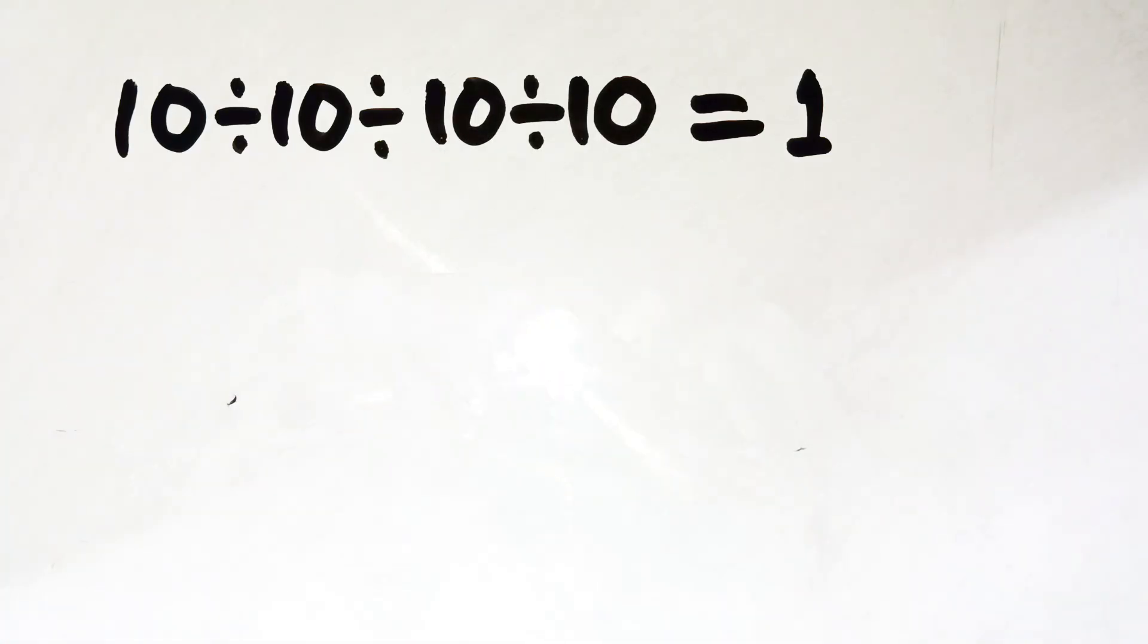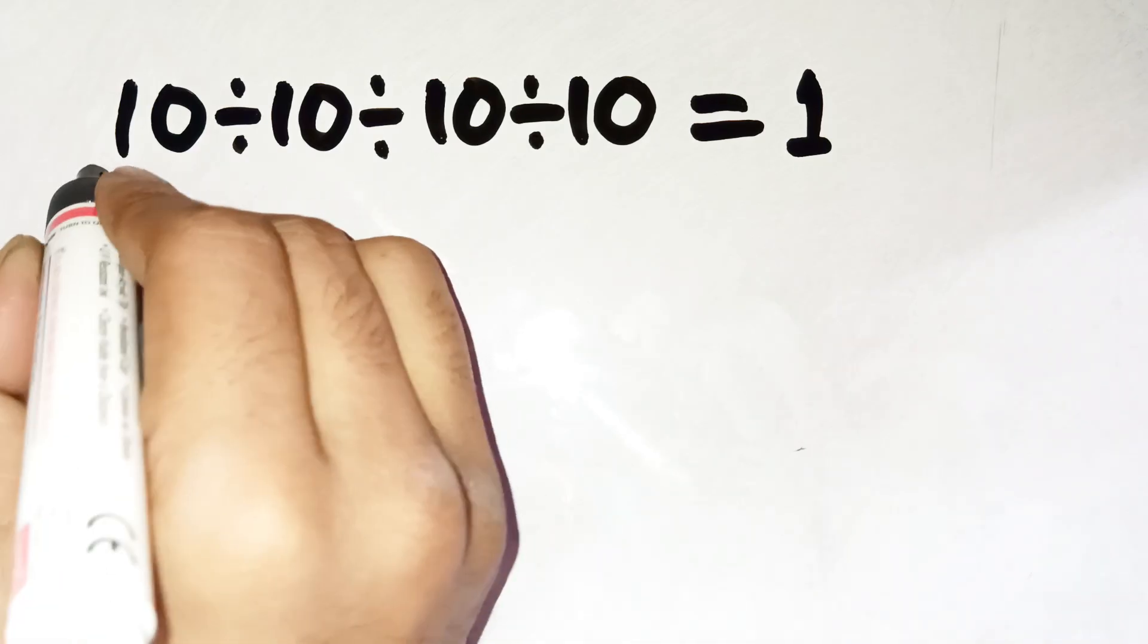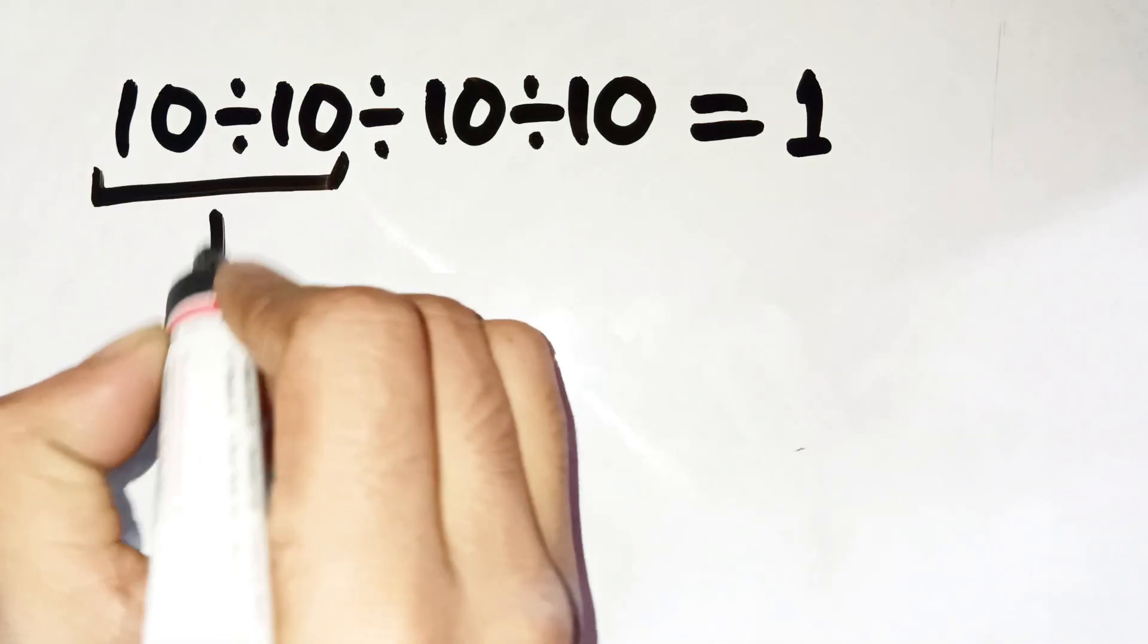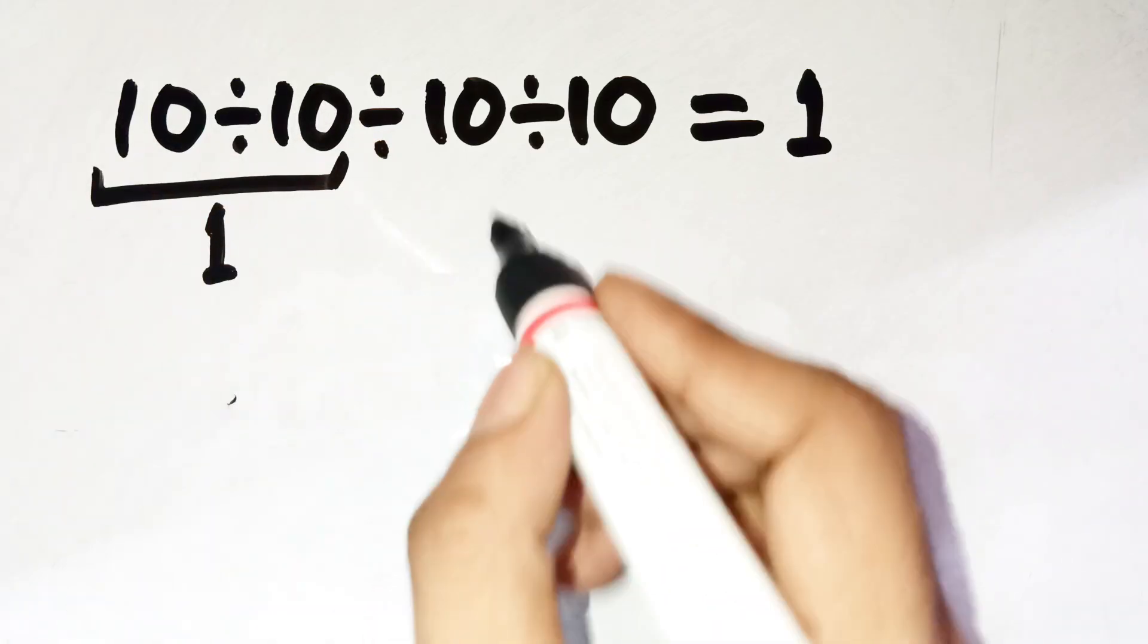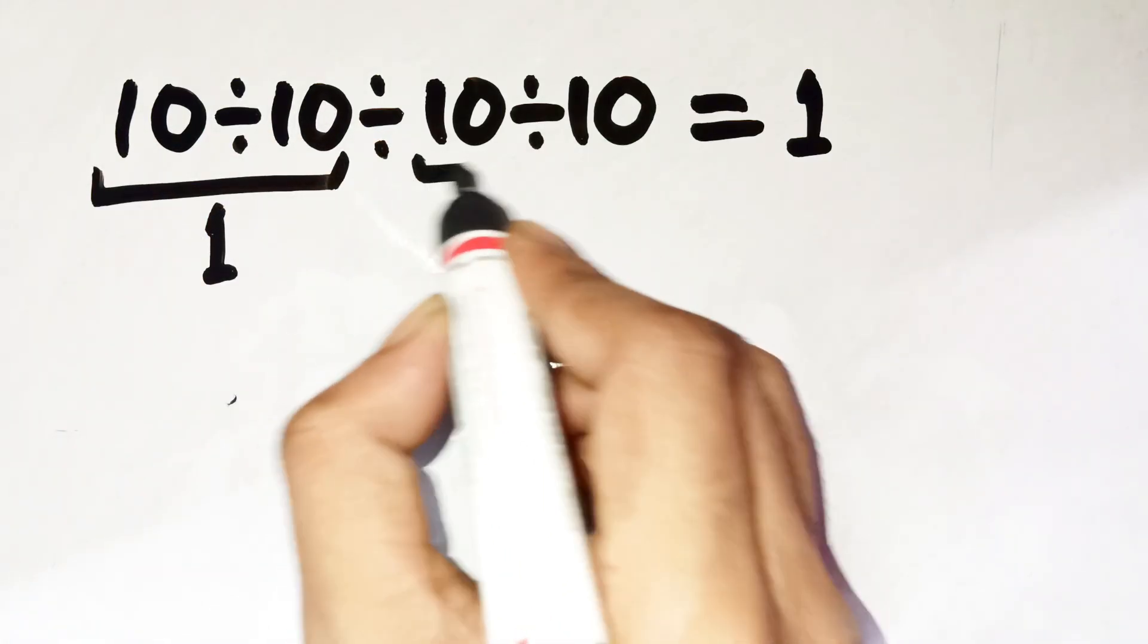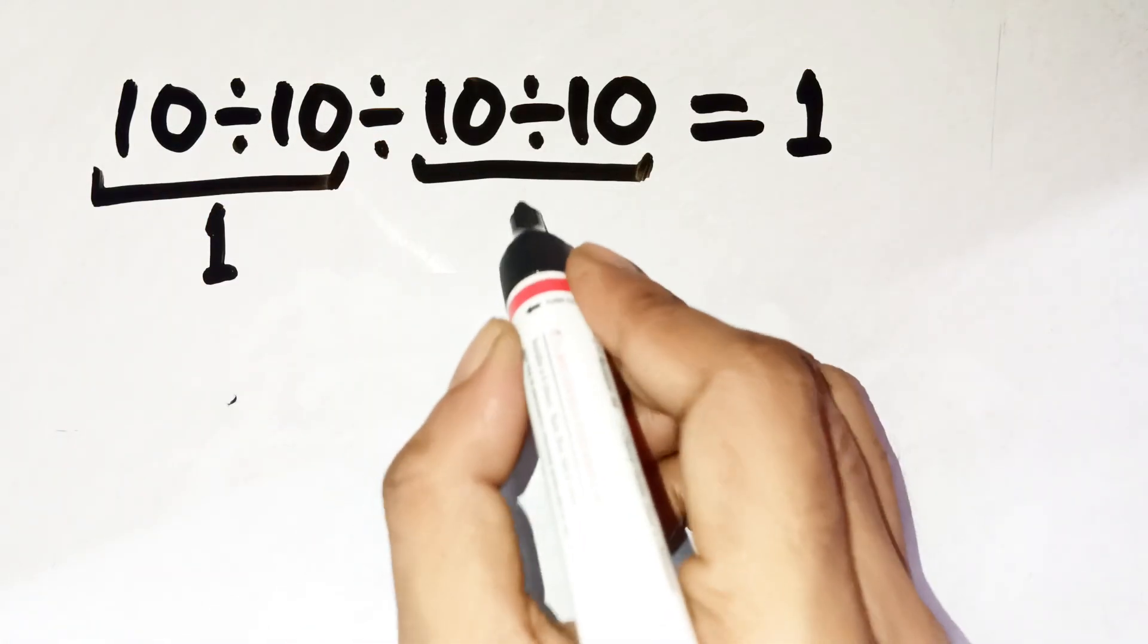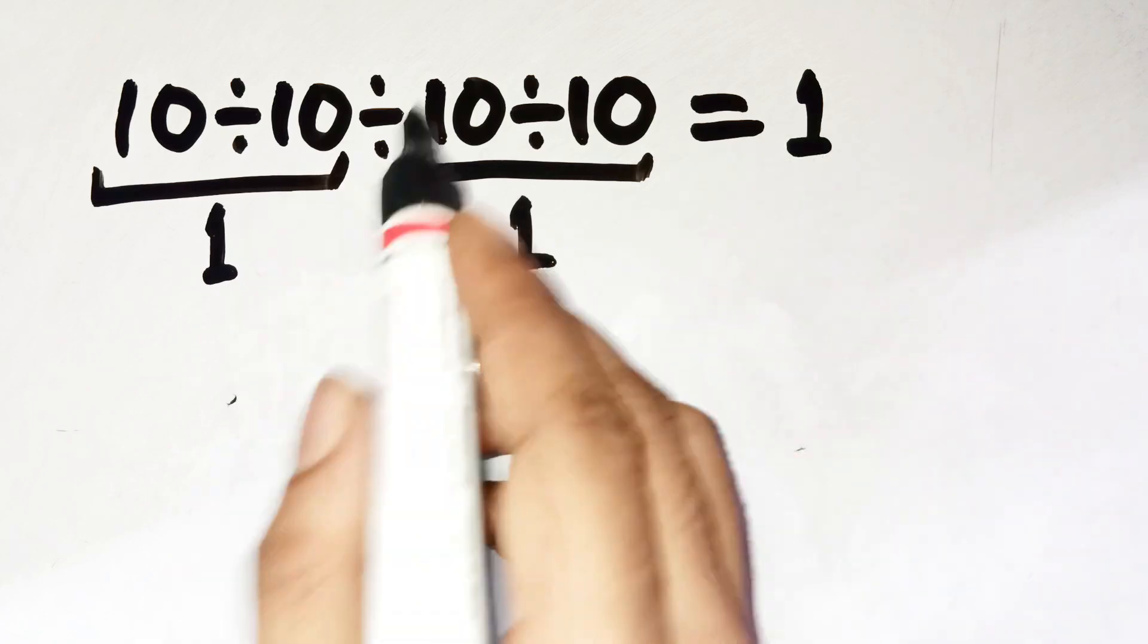And honestly, I get why most people jump straight to that quick little trick. You see the first pair, 10 divided by 10, and your brain goes, okay, that's 1. Then you look at the last pair, another 10 divided by 10, and you go, that's also 1.